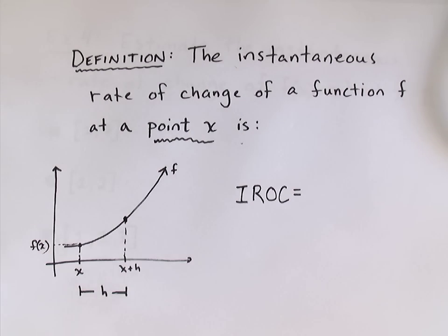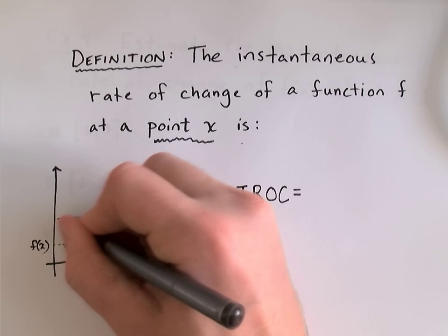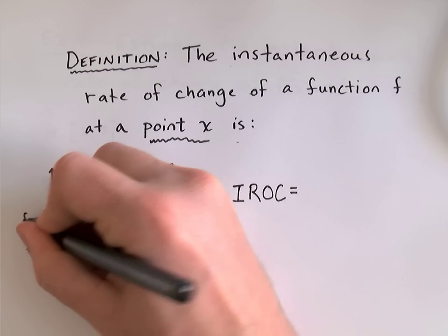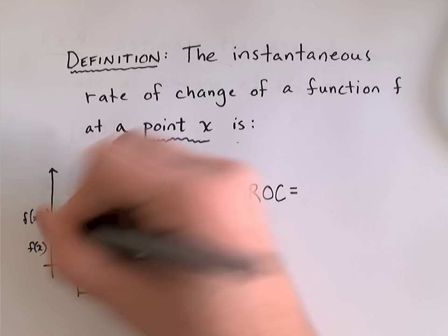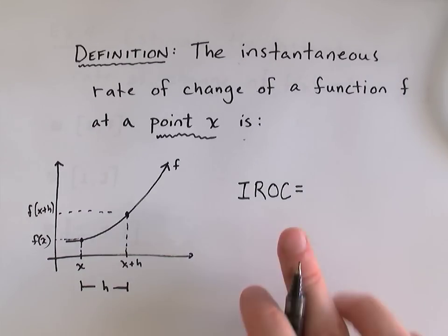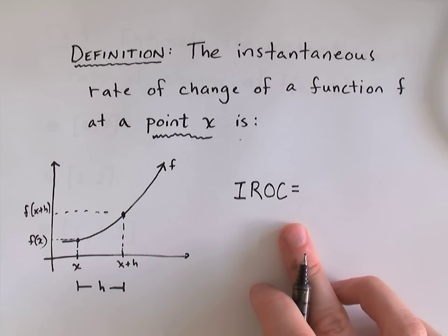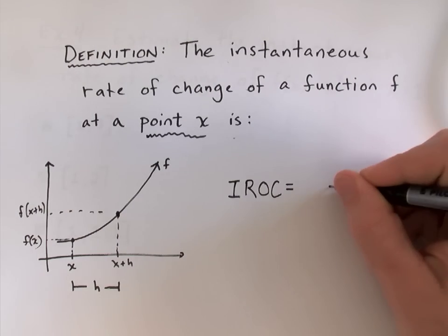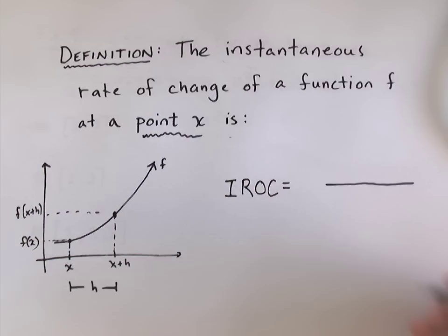Alright? So, the height of the function there is f of x plus h. So, how can I use this setup, which looks like an average rate of change, to describe an instantaneous rate of change? Well, I'll start by setting up the average rate of change.